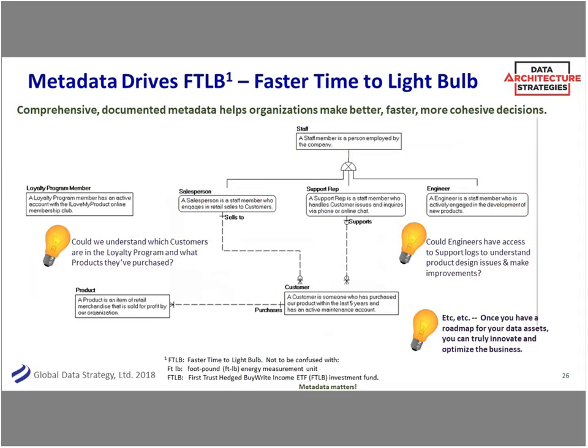One thing I love about metadata is FTLB — Faster Time to Light Bulb — how do we make faster decisions? I'm a big fan of the conceptual data model or the business-level data model because I've seen it over and over — these light bulbs go off. Even a high-level conceptual model: of course we have staff, support reps, engineers, customers, and products. Do we really have to build a model to show that? Yes, you do. Because you start to see the complexity when you spell it out clearly.